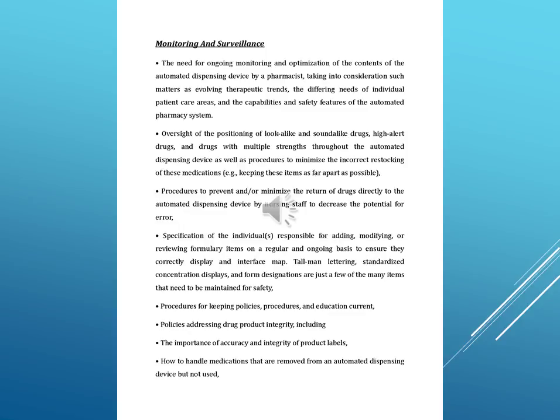All tall-man lettering, standardized concentration displays, and form designations are among the many items that need to be maintained for safety. Procedures for keeping policies, procedures, and education current. Policies addressing drug product integrity, including the importance of accuracy and integrity of product labels, how to handle medications removed from an automated dispensing device but not used, how medication waste is accounted for, checking products for expiration and beyond-use dates, identifying and following up on tampered products, storing products, and procedures for delivering medications to patient care units and individual patients.